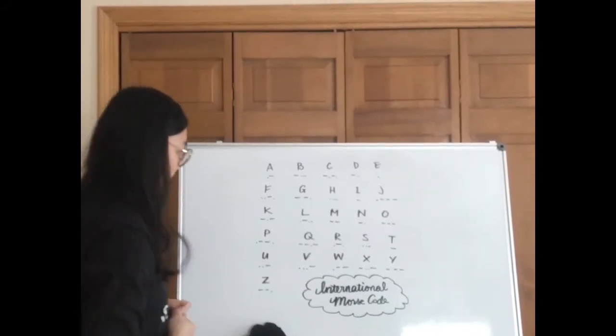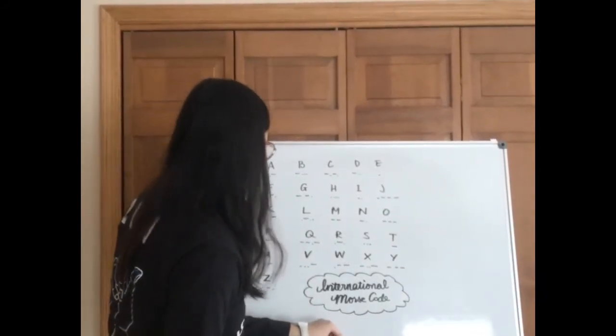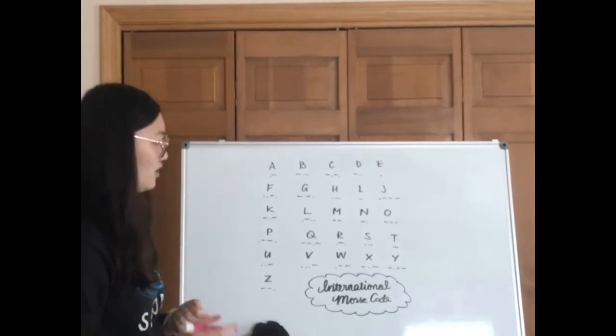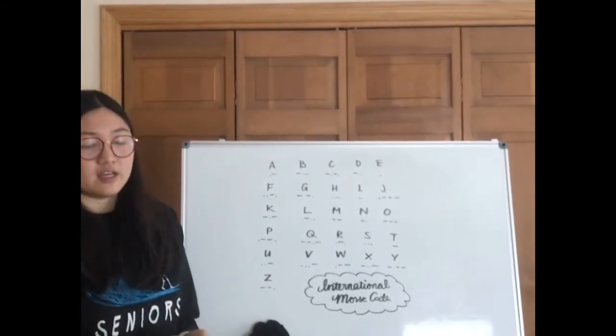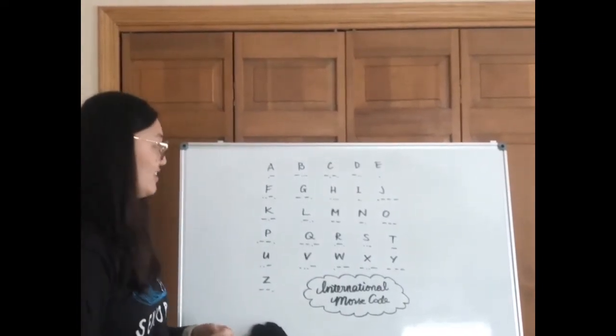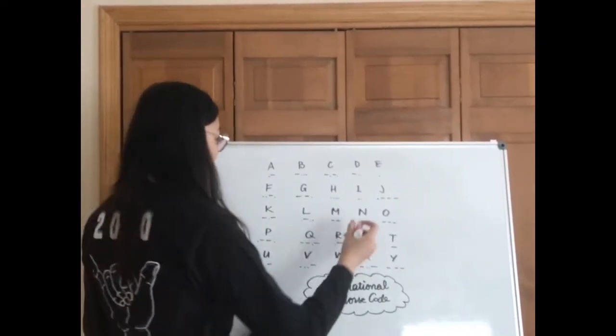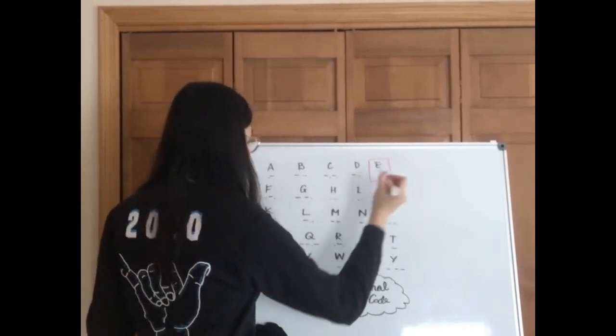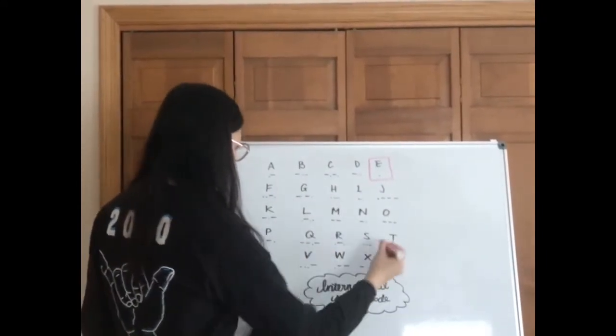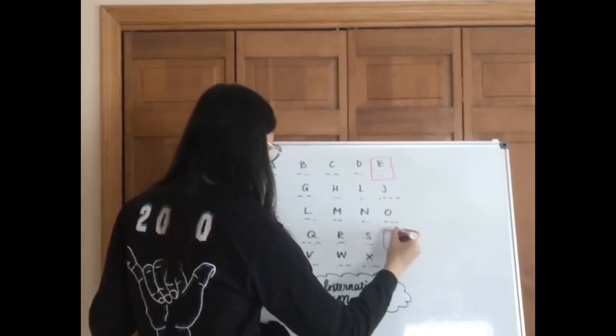So in this case, if you take a look at these, we can see that there are four categories of the letters if we arrange them by the length. You can have onesies - I'm just going to call them onesies, this is not the official term. There's only one dot or one dash, shown here.